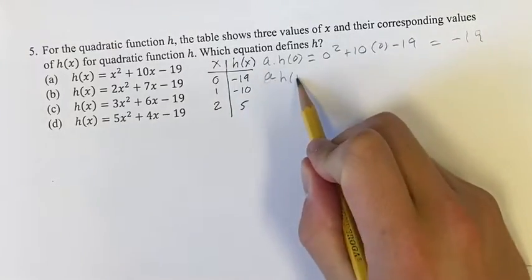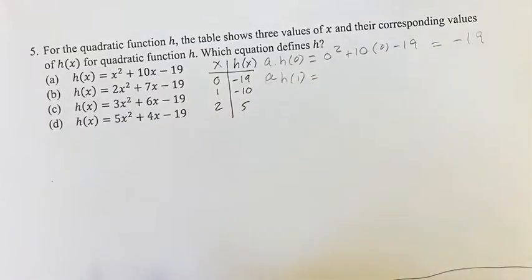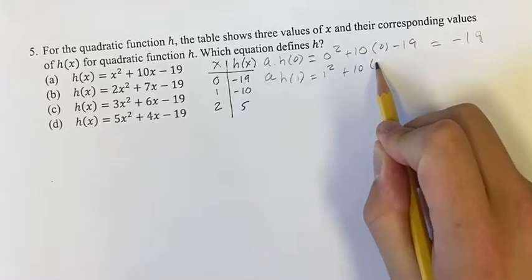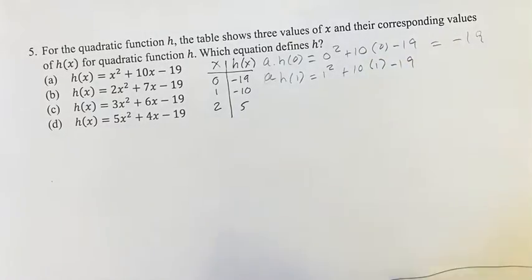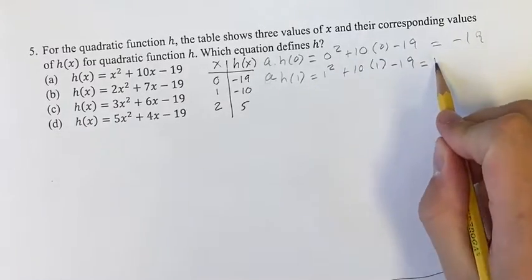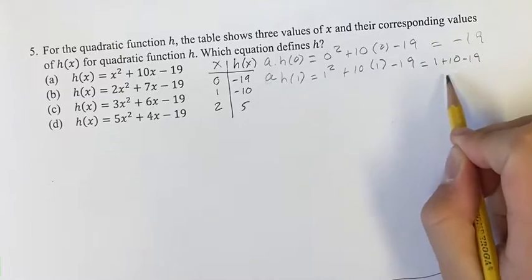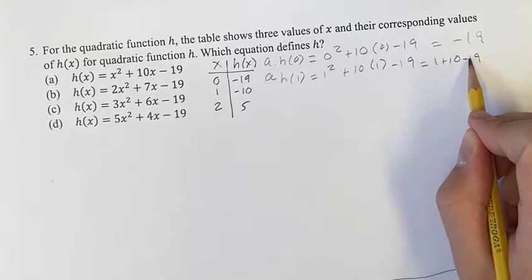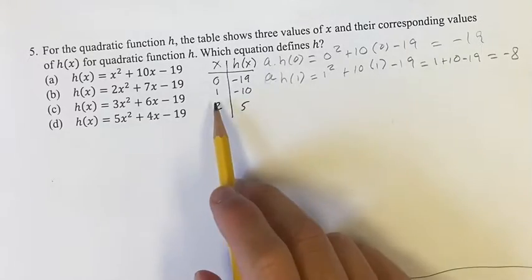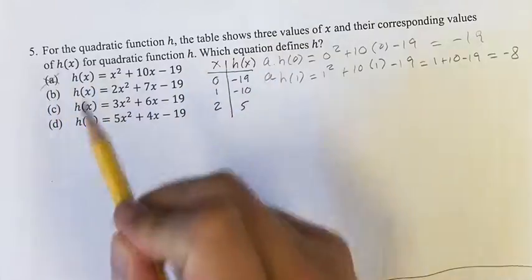For a, h(1), again we're plugging in 1 wherever we see an x, is 1² + 10(1) - 19. That's going to look like 1 plus 10 minus 19. This is 11 minus 19 equals -8. We're looking for -10, we got -8, so that means a is not going to be our answer.